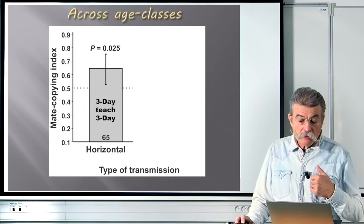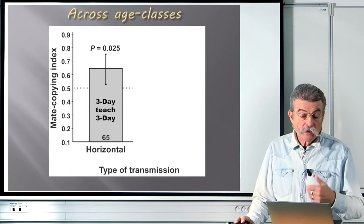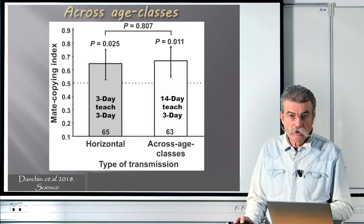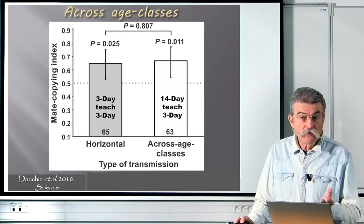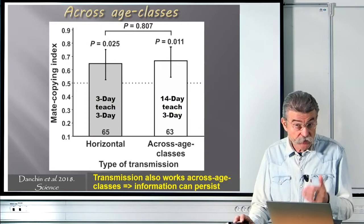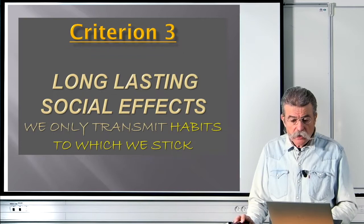The results were quite clear. In the horizontal treatment, where observer and demonstrator females are the same age, there was again a bias for the colors selected during the demonstration. We found exactly the same result when demonstrator females were of the age of the mothers of the observer flies, with no significant difference between the two situations. So we can conclude that social transmission also functions across age classes, meaning information can persist when transmitted from old to young across time and hopefully generations. Criterion 2 is fulfilled.